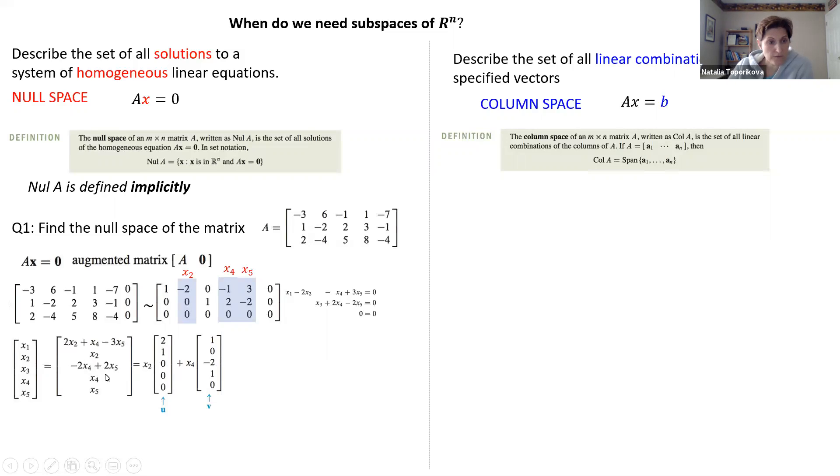And we repeat this process for the vector x4. We get 1 from the first entry, 0 from the second, minus 2 from the third, 1 from the fourth, and nothing from the fifth. And we repeat the same process for the weight x5 and get the vector w.